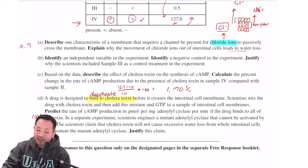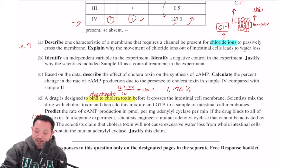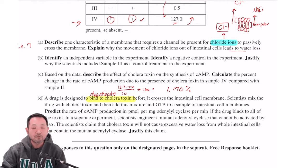Now, it says, in a separate experiment, scientists engineer a mutant adenocytate that cannot be activated by the G subunit A. The scientists claim that cholera toxin will not cause excessive water loss from the whole intestinal cells that contain the mutant adenocytate. Justify this claim. So for this answer,